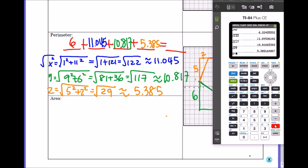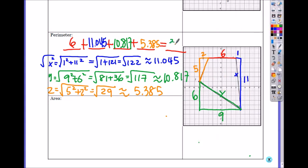6 plus eleven point zero four five, add it with ten point eight one seven plus five point three eight five, thirty-three point two four seven, thirty-three point two four seven units.